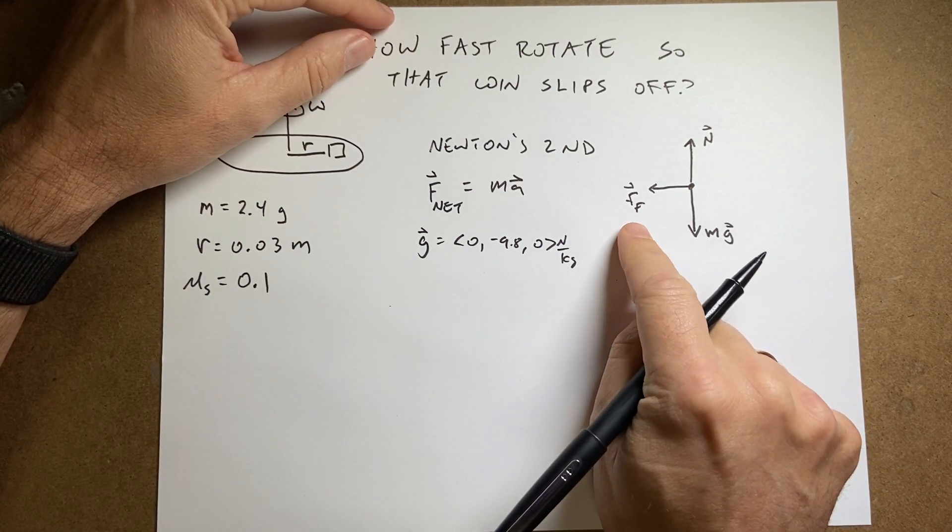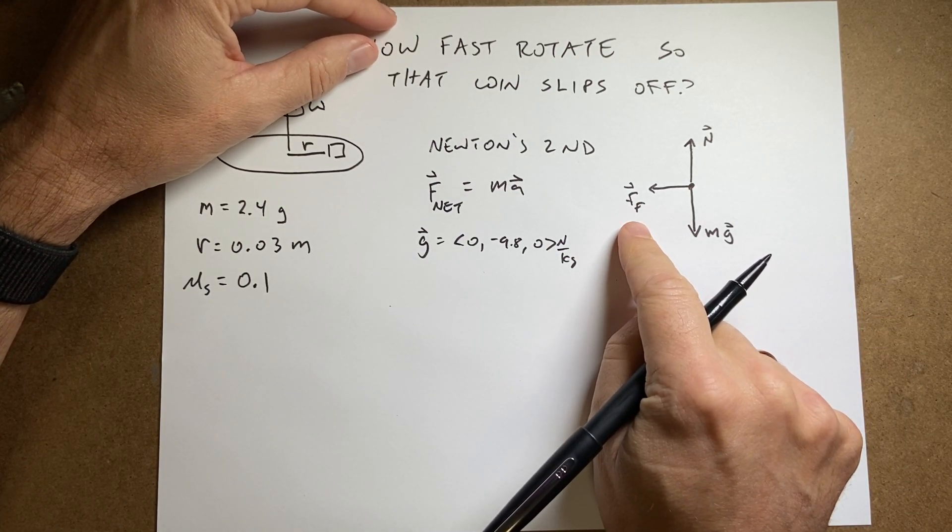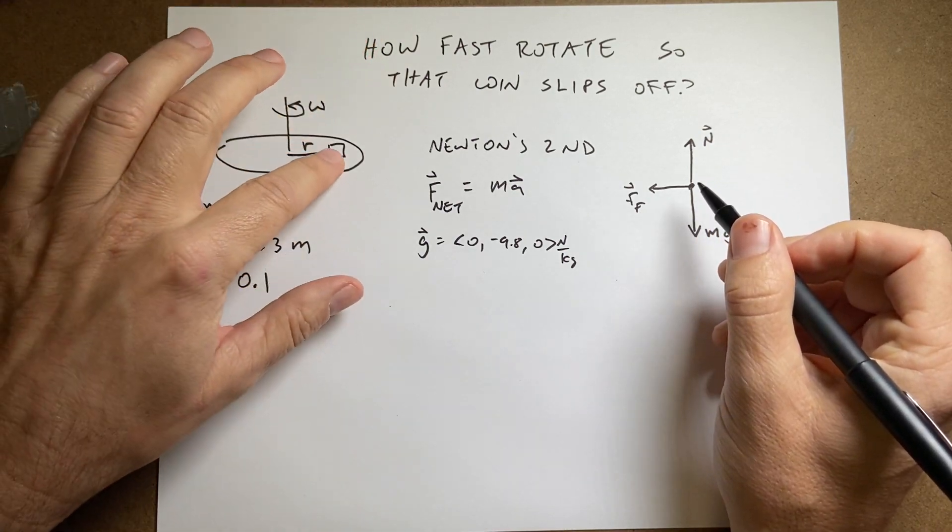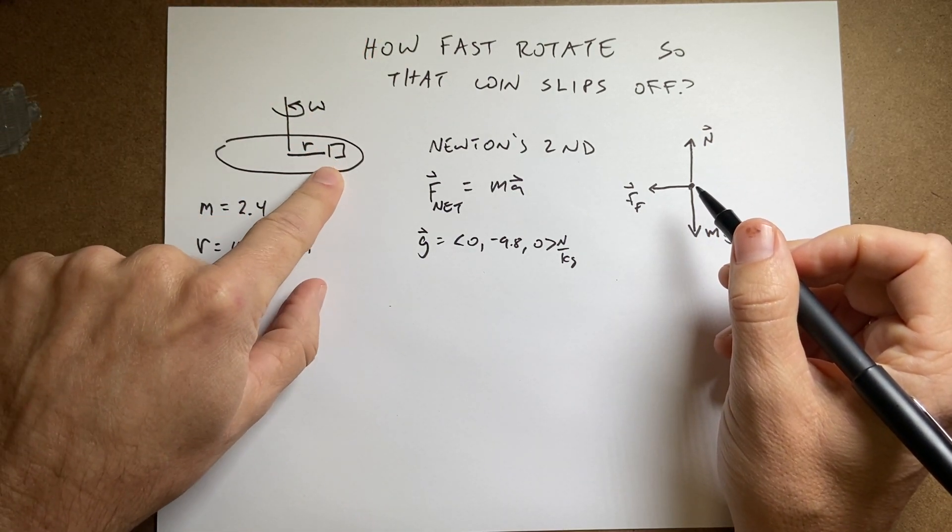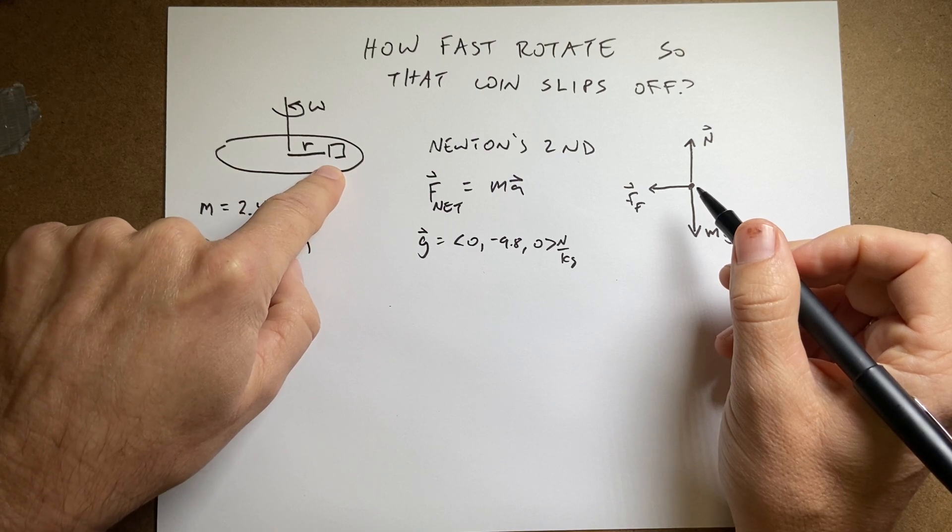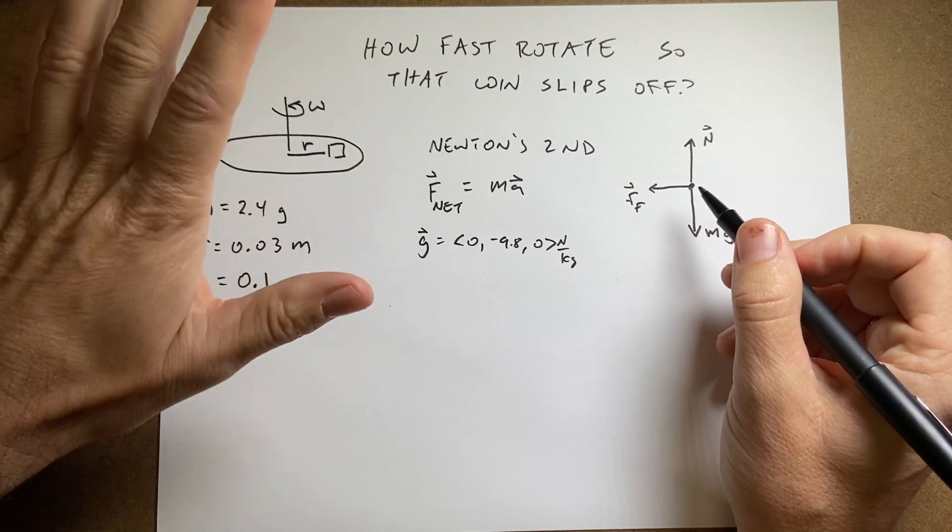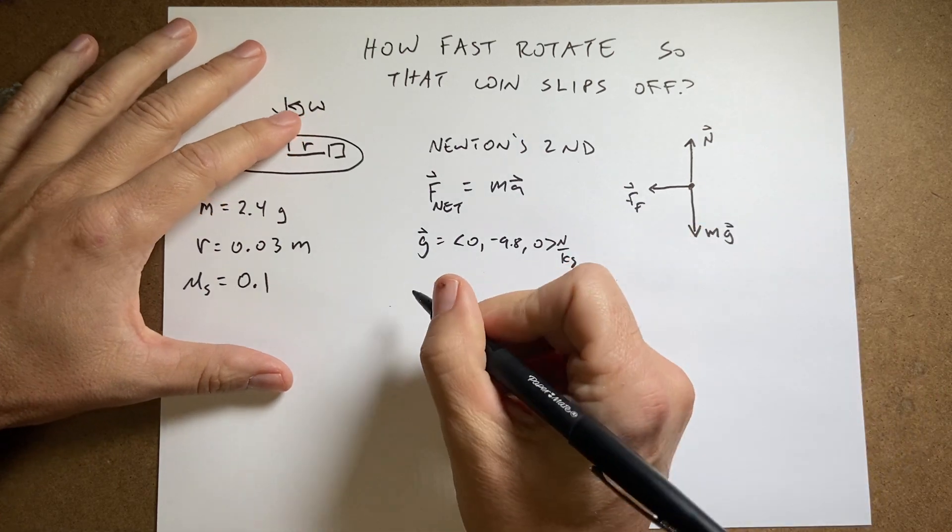Now the friction force is really kind of weird. It's an interaction between the atoms in the penny and the atoms in the disc which is really hard to calculate. But we can make a model for the magnitude of this frictional force.